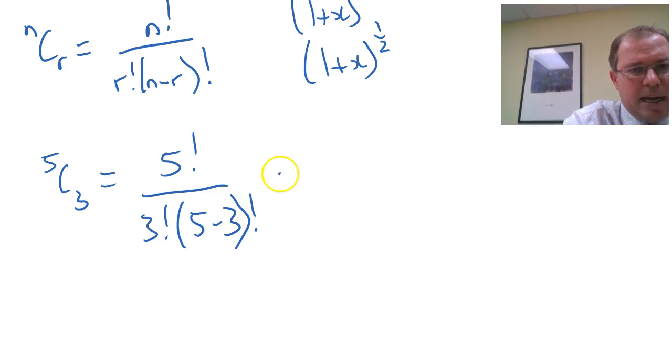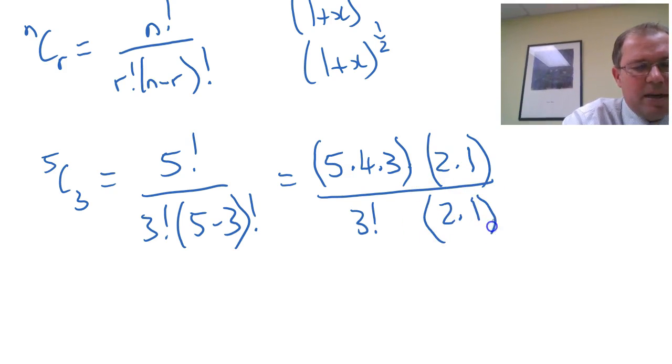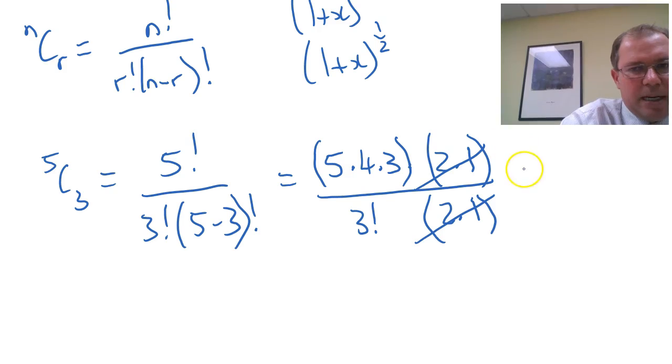Now we can rewrite that as 5 factorial, which is 5 times 4 times 3 times 2 times 1. I'm just going to put a bracket around those for now. Divide it by, I'm going to leave the 3 factorial and I'm going to write the 5 minus 3 factorial as 2 factorial, 2 times 1. And I'll put a bracket around that. You can see that I've rewritten that in such a way that I want to actually cancel the 2 times 1 and leave it as 5 times 4 times 3 over 3 factorial.